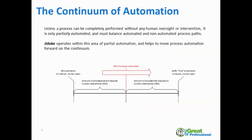For any process in business — or really in the world — there exists a continuum of automation, which I've visualized here. Unless a process is completely performed by a machine versus completely performed by a human, it's going to be experiencing some degree of partial automation, especially in this day and age where there's not many things that are purely one or the other anymore, particularly with the rise of digitization and technology.